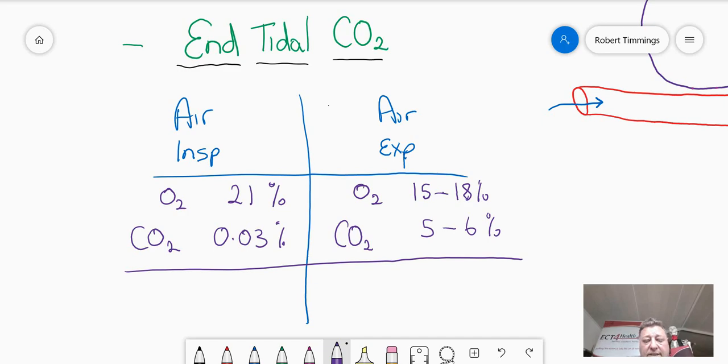Now, when we calculate that into a pressure, an end tidal, at the end of expiration, pressure of carbon dioxide, an ETCO2, that value is the same as the amount of carbon dioxide that is in your arteries. And that pressure is called the PaCO2, meaning the pressure of arterial carbon dioxide. That value is equivalent. It's 35 to 45 millimeters of mercury. 35 to 45 millimeters of mercury. That suggests that the carbon dioxide concentration that's inside your alveoli is the same as the carbon dioxide concentration that's inside your arteries.